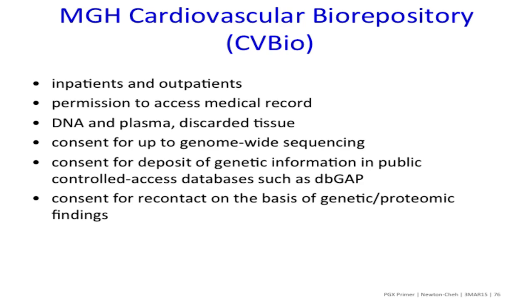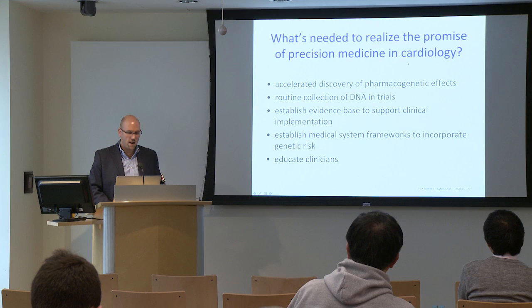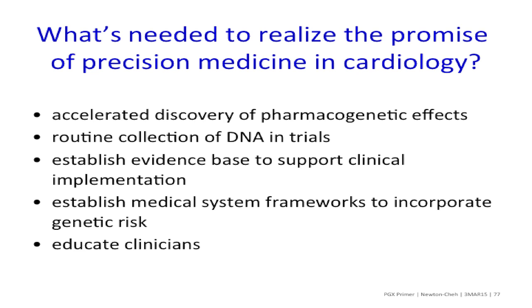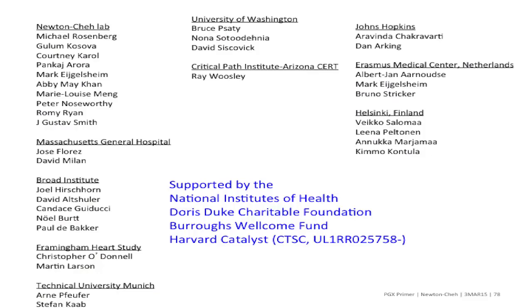What's needed to realize the promise of precision medicine in cardiovascular pharmacogenetics? Number one, we need accelerated discovery of pharmacogenetic effects — routine collection of DNA in clinical trials. We need to establish the evidence base to support clinical implementation. I've given some examples where the evidence base has not supported clinical implementation. We need to establish a medical system framework that can incorporate genetic risk — we currently do not have that in place. And we need to educate clinicians, because it's difficult even for people actively engaged in this field to interpret results appropriately, and that much harder for clinicians who are not well versed in this. Thanks very much, and I'm happy to answer any questions.